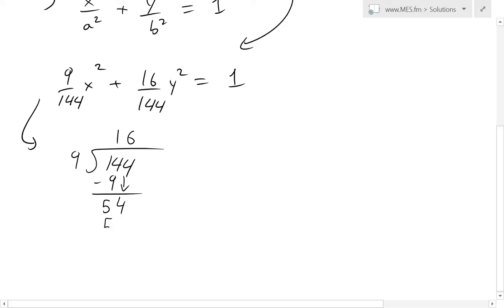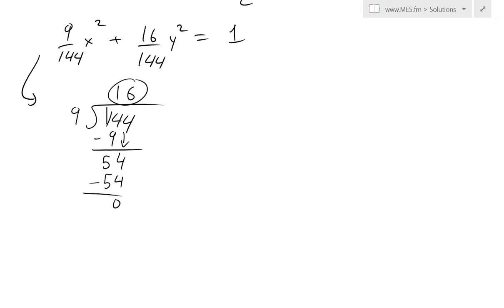So 6 times 9, that's just 54, subtract, remainder 0. So basically 9 goes into 144 16 times, which is convenient because we have a 16 right here as well.